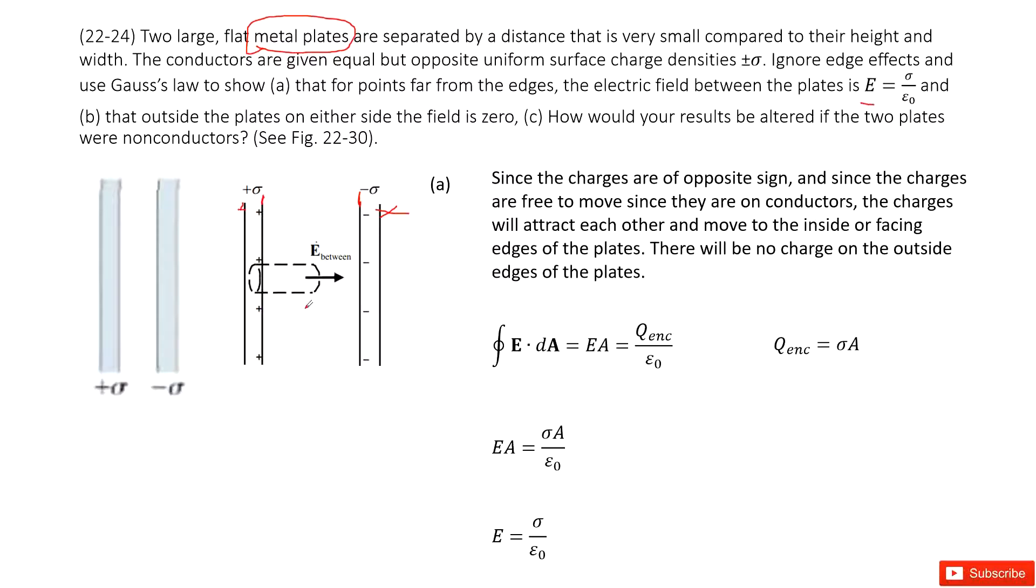Now we can see if we want to find the electric field in between these plates in this region, we can draw the Gaussian surface, look like this one. Still, we can see this is the electric field density times the Gaussian surface equal to enclosed charge divided by epsilon naught. And then we can see the enclosed charge comes from there. So we can use the surface density times A.